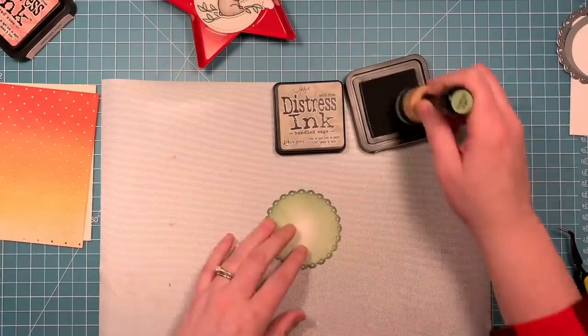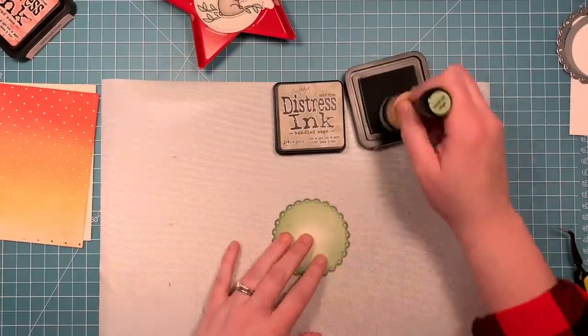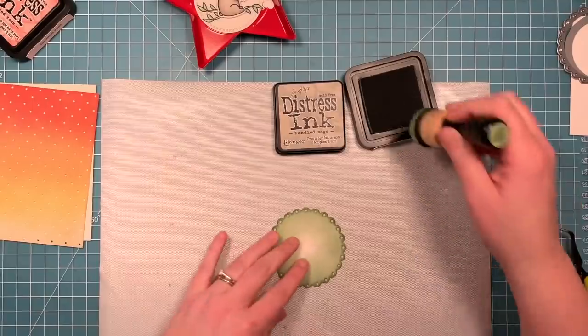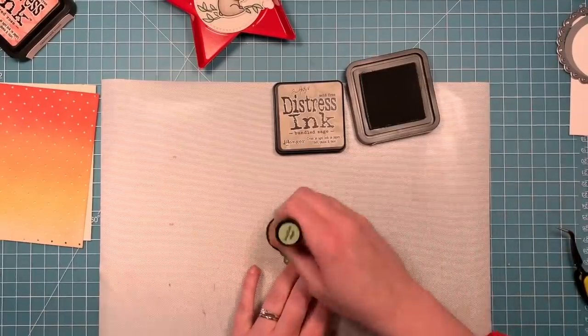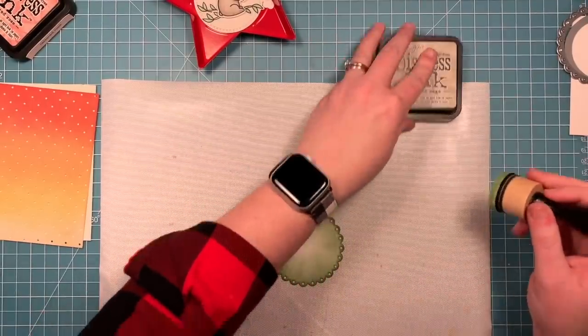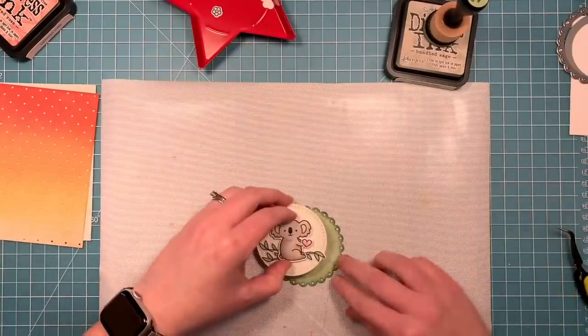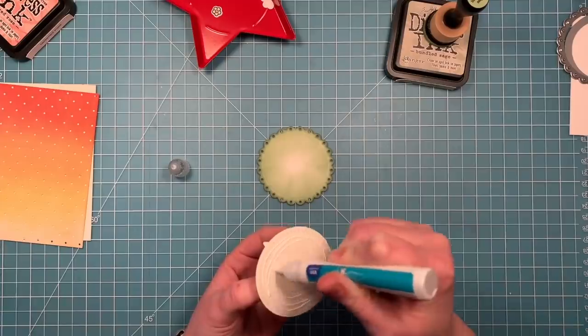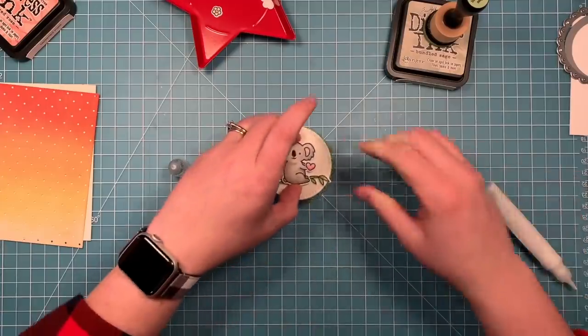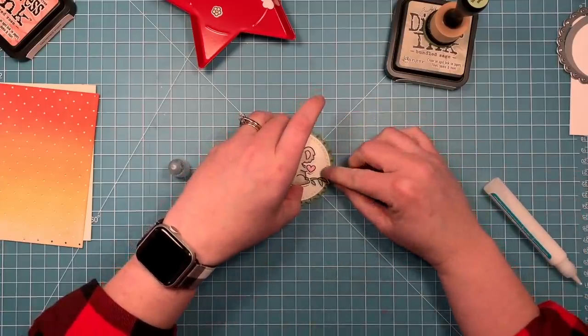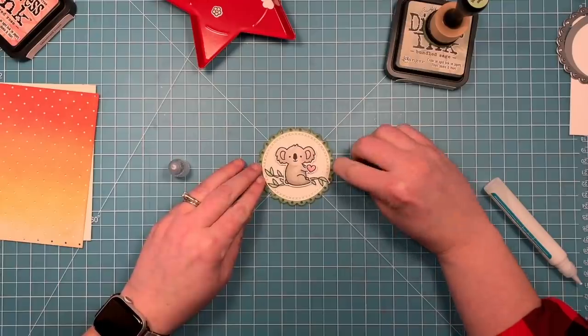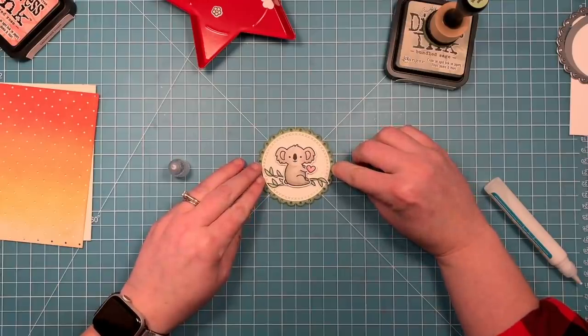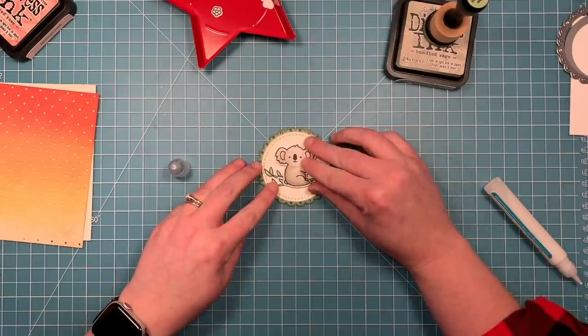You don't have to color the whole thing, just the edges because that is all we're going to see. One thing to remember when using distress inks is to let it dry before you stick things down if you're using a dry glue like a tape runner. But liquid glue you don't have to wait. I find that if it's still a little damp that an adhesive runner doesn't stick all the time.